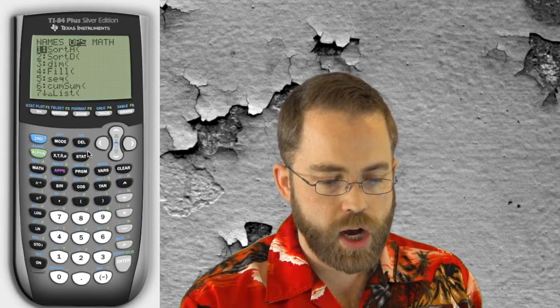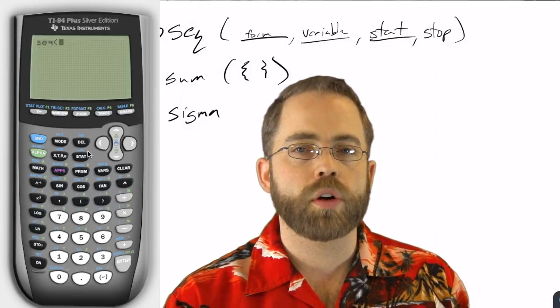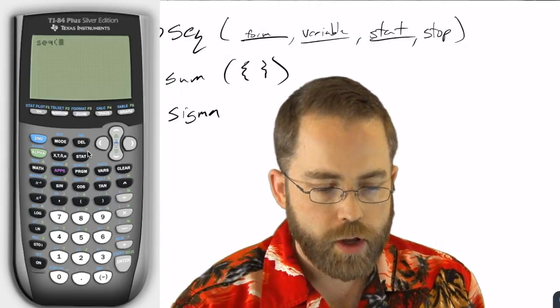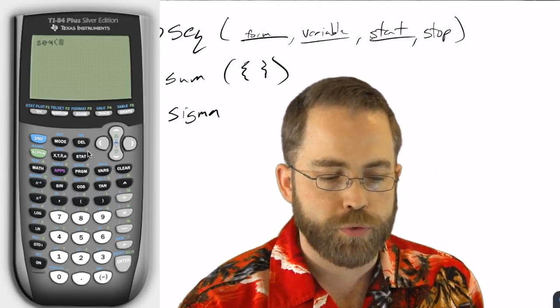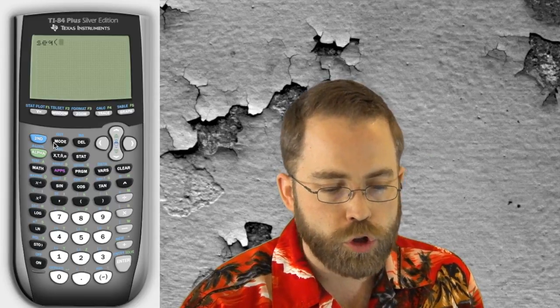Now, we can get this list out to be useful for us back at the cursor, at the regular part of the calculator, by using the sequence program. So if you see here, second stats is list. And under ops, there's this wonderful thing called sequence. Now, sequence wants four arguments. So look at this. The first thing you have to do is a formula. You have to say, all right, I'm talking about the formula.